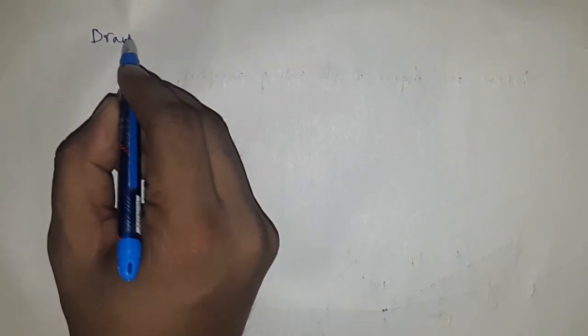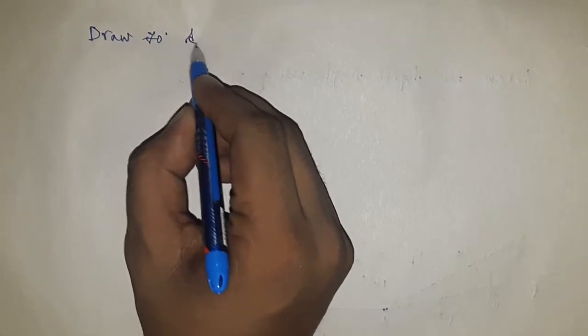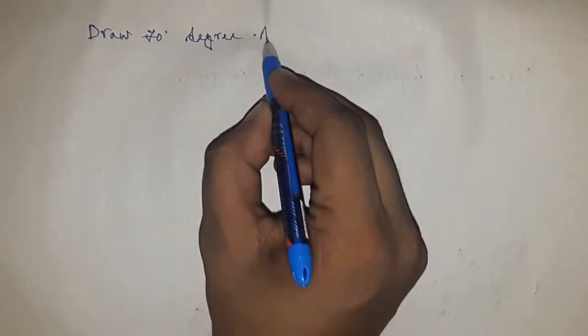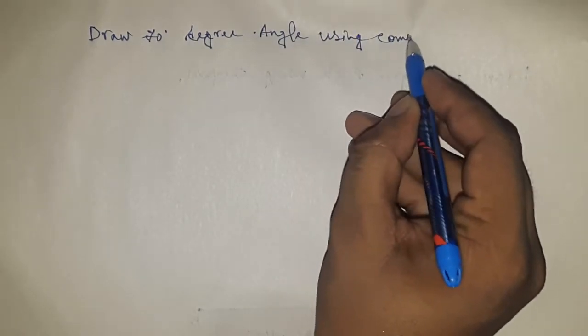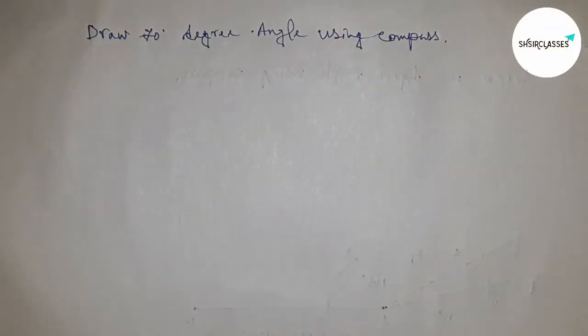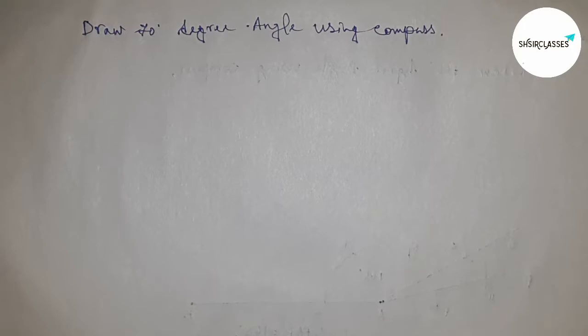Hello students, welcome to Sister Classes. Today we're talking about the construction of a 70-degree angle using a compass. Before starting the video, I have one request: please subscribe to the channel and press the bell icon for future video notifications.